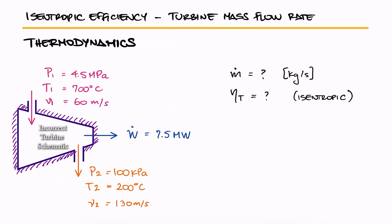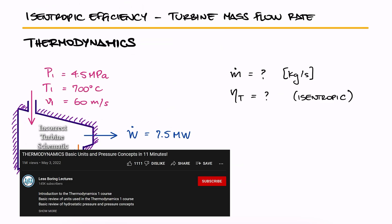As usual, try pausing here to solve this problem yourself before watching the solution. This is the first example for the isentropic efficiency main lecture. The link to that 8-minute lecture and all the other examples and lectures of the Thermo course are found in the description below.